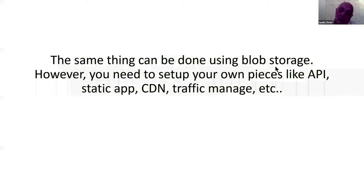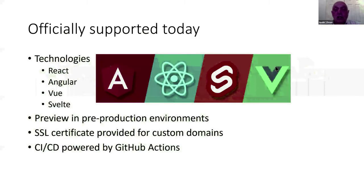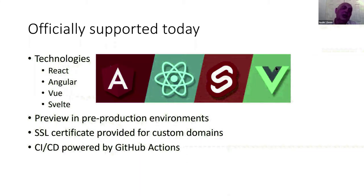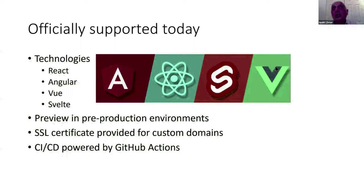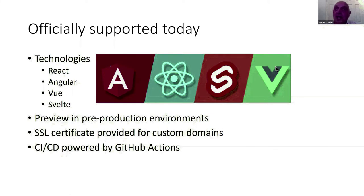That's the benefit of using Azure Static Web Apps. The technologies supported today are React, Angular, Vue, and the new kid on the block, Svelte — another SPA technology. It's in preview, and you can use it for pre-production environments. It's not recommended for production environments simply because it could change. One cool thing is you can customize a domain for your website, and Azure provides you an SSL certificate — so you don't need to buy one.